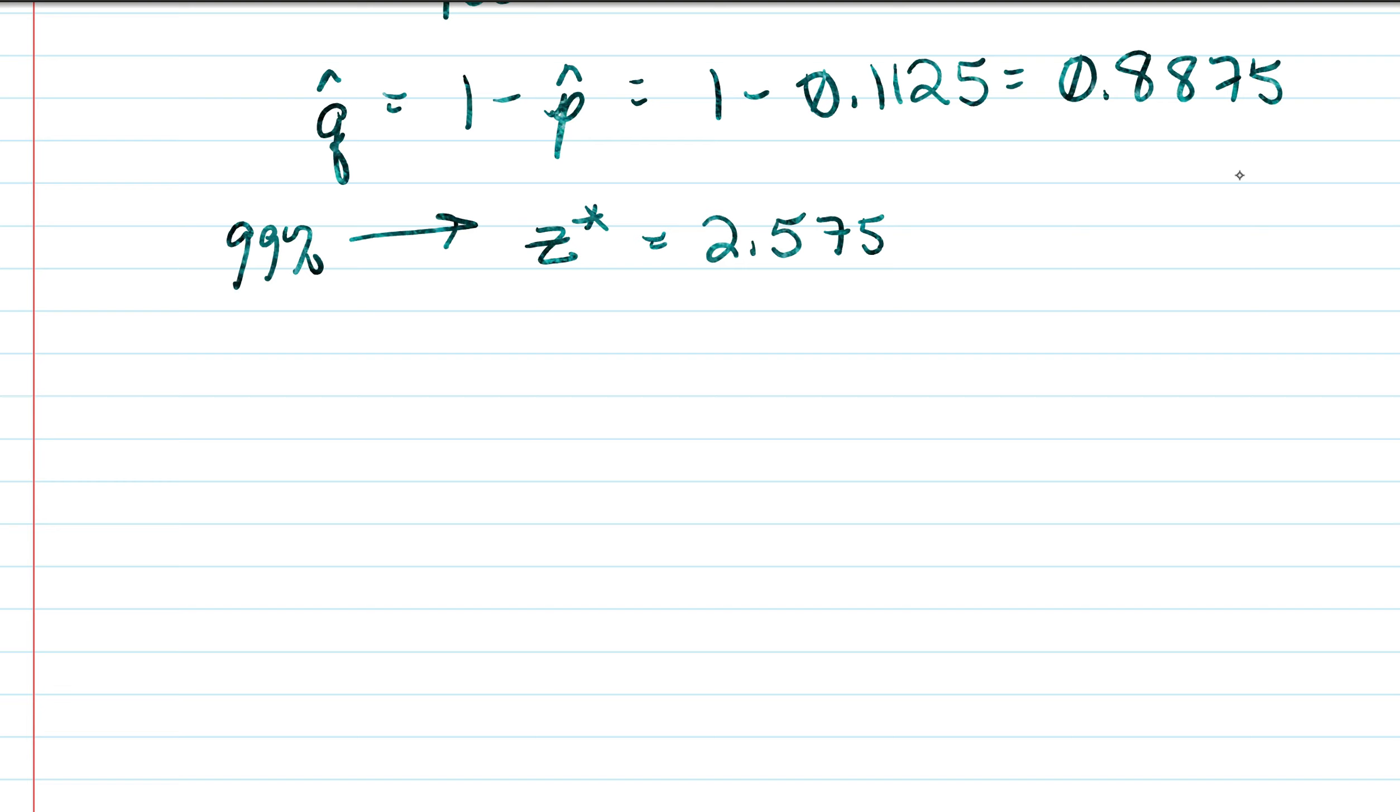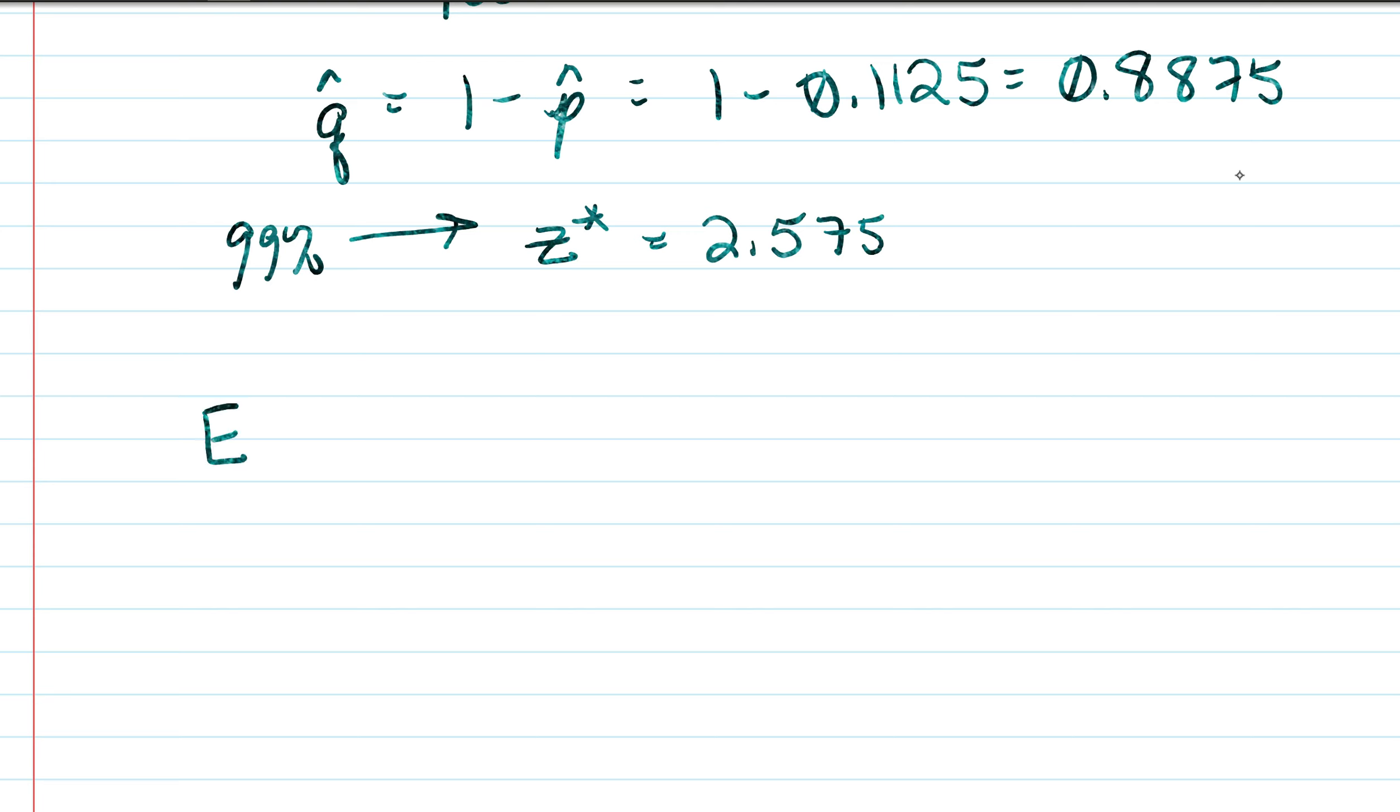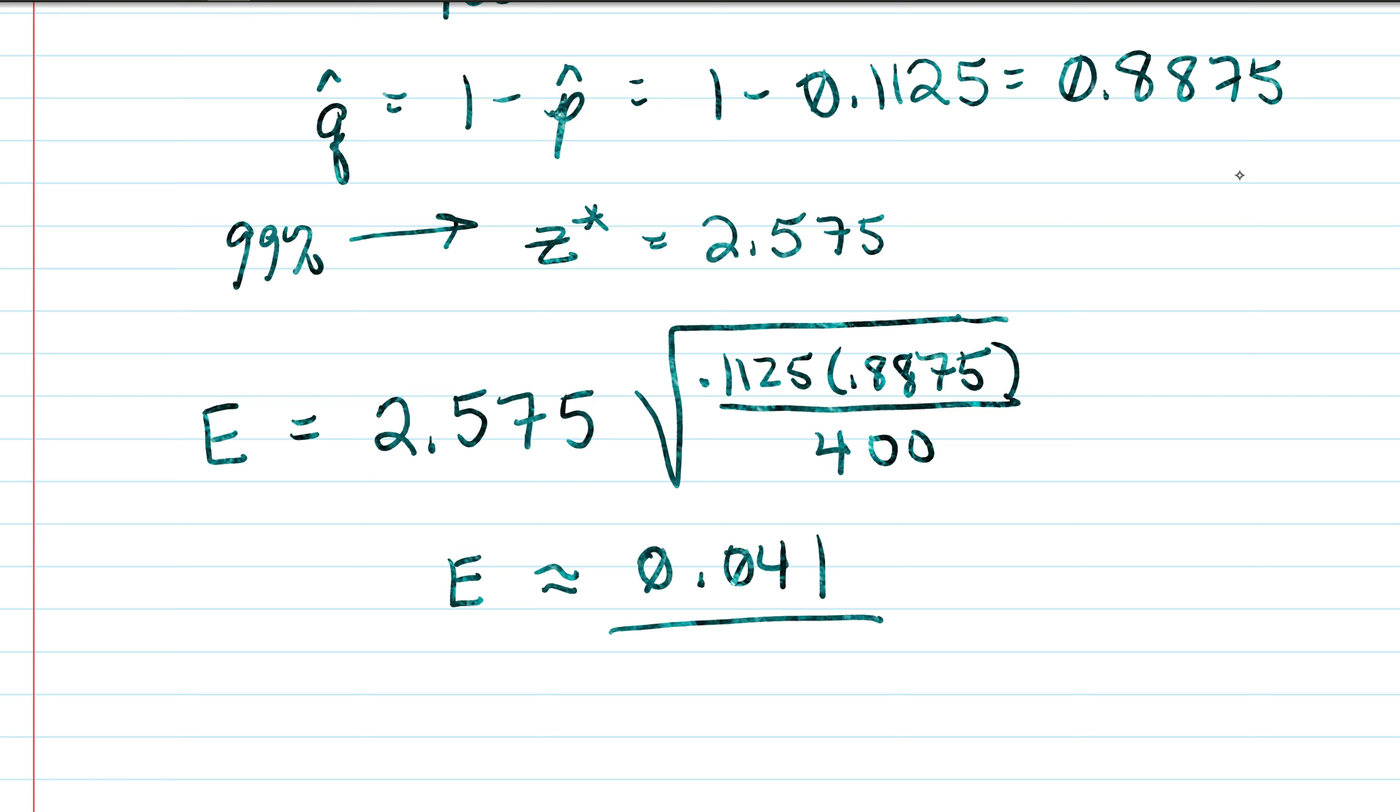Next we'll plug into the formula for margin of error. So our formula is as such: it's E is equal to our z-asterisk which is 2.575 and it's multiplied times the square root of the product of p-hat and q-hat so that's 0.1125 times 0.8875 and that product is divided by n. Our n value for this problem is 400, so crunching the numbers in the calculator it's approximately 0.041. So the margin of error is 0.041.